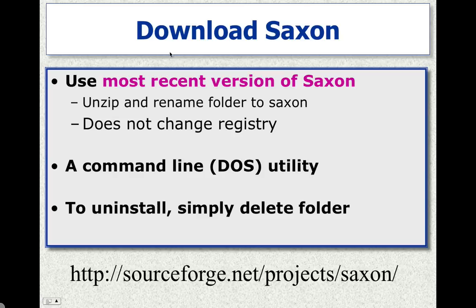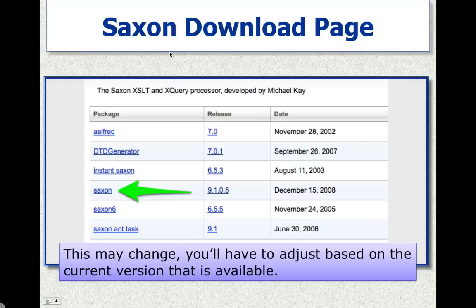If you ever want to uninstall Saxon in the future, just delete the folder. Here's a picture of the current SourceForge page showing the different options available for Saxon. What you want to do is choose just the plain Saxon — you can see we're up to version 9 now; probably when you see this it'll be a much higher version. There's also Instant Saxon, which is a much older version that was used on Windows 2000 and XP, as well as some other utilities. Basically, just use the plain Saxon download whatever the release number is.